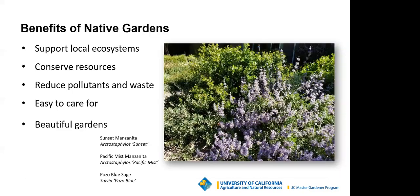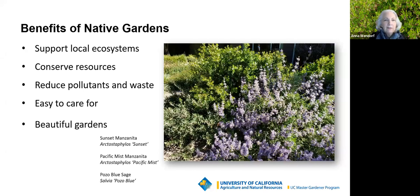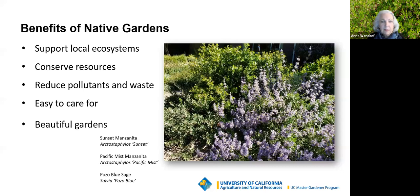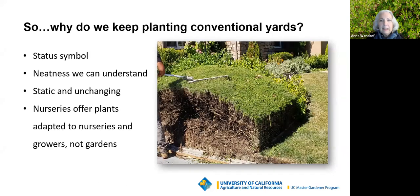Let's talk about some of the benefits of putting in natives in your garden. We'll discuss supporting your local ecosystems — taking care of pollinators, birds, and other aspects of the wild areas around us. We're going to talk about conserving resources such as water and fuel, reducing pollutants that get into the groundwater, how natives are easy to care for, and how they are beautiful. Here we have a sunset manzanita in the background, a pacific mist manzanita ground cover on the left, and a pozo blue sage with beautiful flowers.